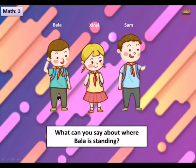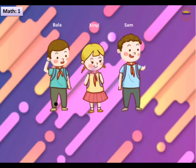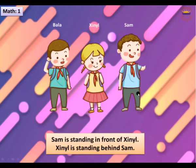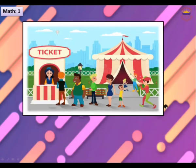What can you say about where Bella is standing? Sam is standing in front of Zenail, and Zenail is standing behind Sam. Now, look at this picture.